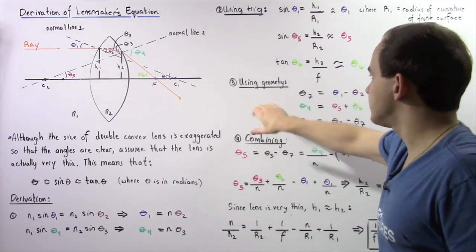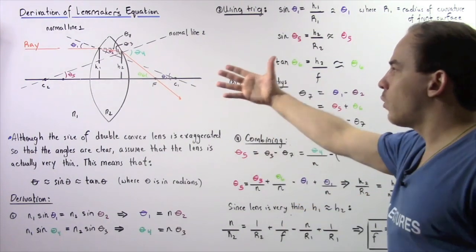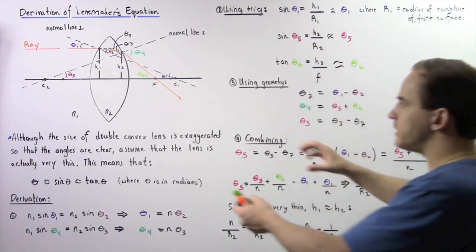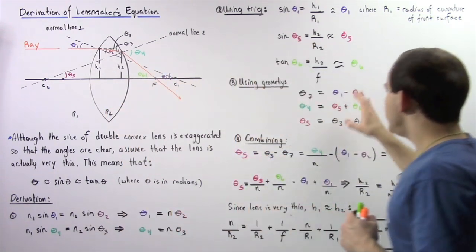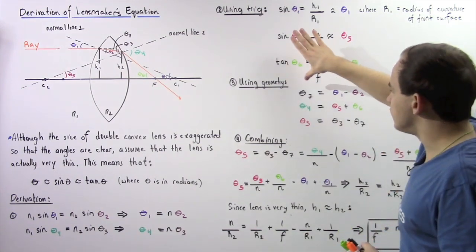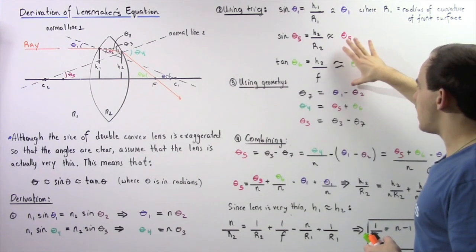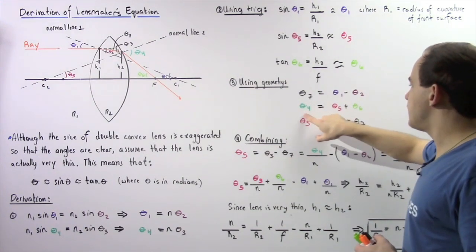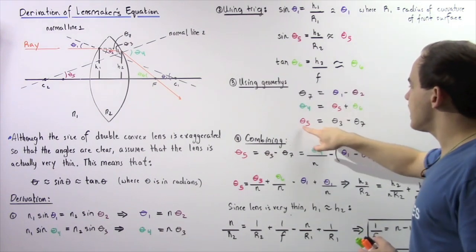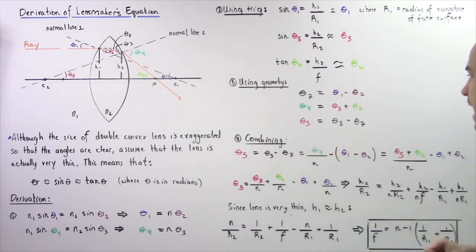Step 3: Use geometry to obtain three angle relationships from the diagram. First, θ7 = θ1 − θ2. Second, θ4 = θ5 + θ6. Third, θ5 = θ3 − θ7.